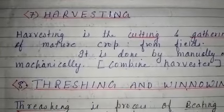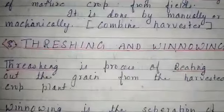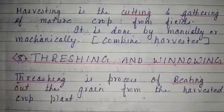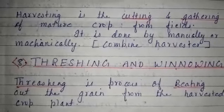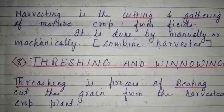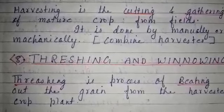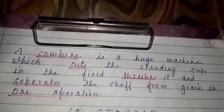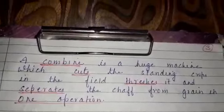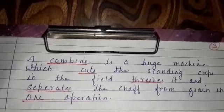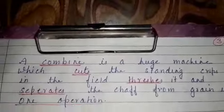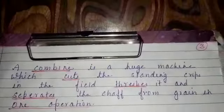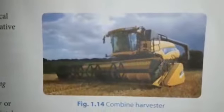The eighth step is threshing and winnowing. Threshing is the process of beating out the grain from the harvested crop plant. Winnowing is the separation of grain from chaff. A combine is a huge machine which cuts the standing crops in the field, threshes them, and separates the chaff from the grain in one operation.